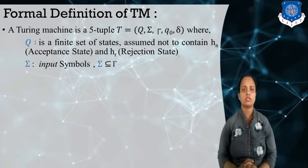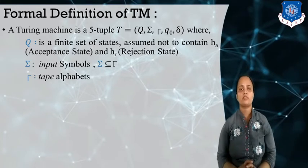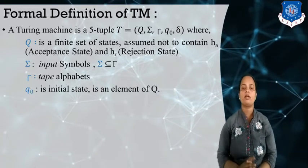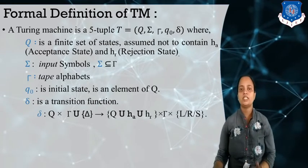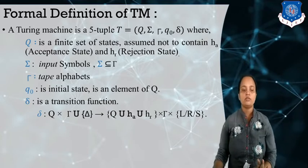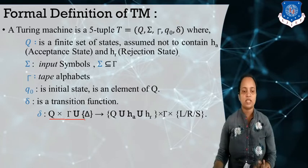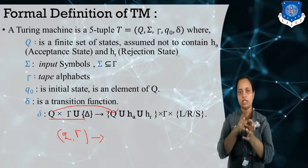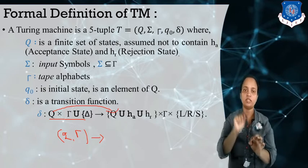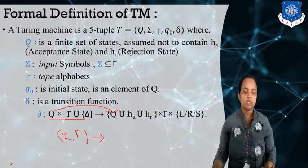So Q defines the states, sigma is the input alphabet which is a subset of the tape alphabet, Q0 defines the initial state, and the transition function. For the deterministic Turing machine, it takes two things as input: the current state and the tape alphabet. By taking these, it moves to a state. For any given input and given state, it will move to only one state. This is called deterministic.